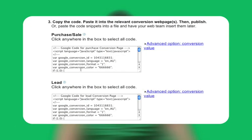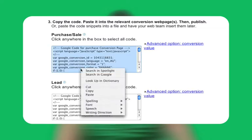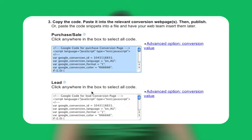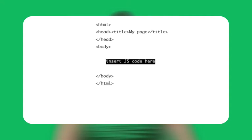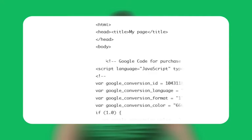On the same page, you will see several lines of JavaScript code. It is this snippet of code that needs to be placed on your conversion confirmation page. To do this, copy all of the lines of code and paste it between the HTML body tags on your conversion confirmation page, closer to the closing body tag.